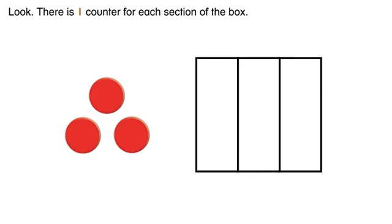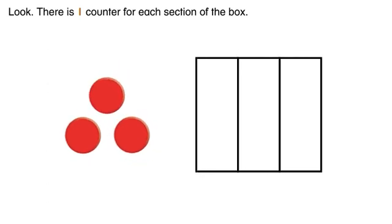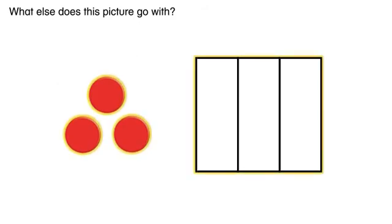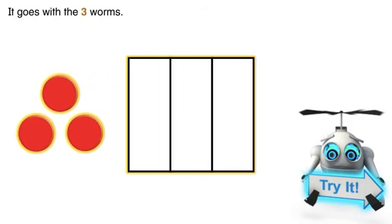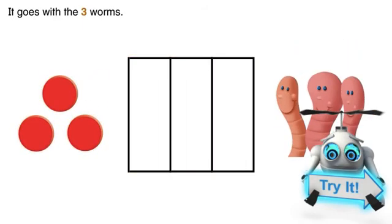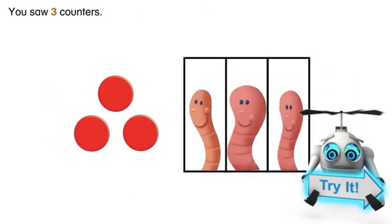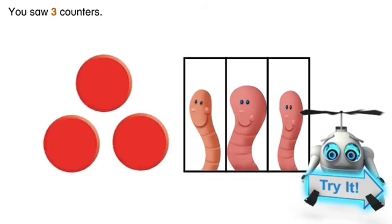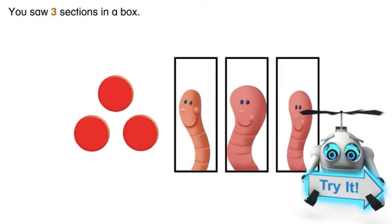Look, there is one counter for each section of the box. What else does this picture go with? It goes with the three worms. Today, you learned about three. You saw three worms. You saw three counters. You saw three sections in a box. Thank you.